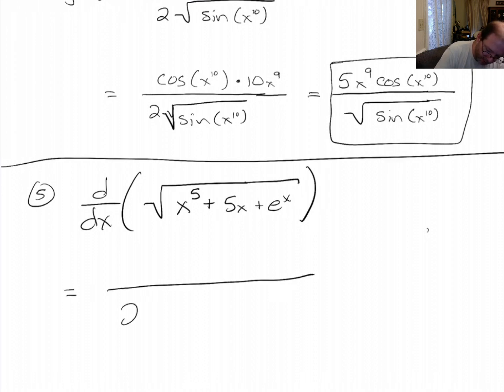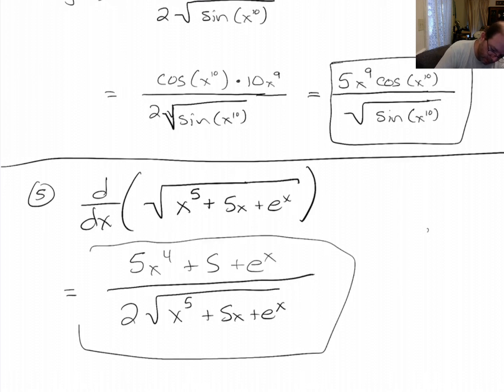Alright. What my rule says is this becomes 2 root of this. And up top, we get the derivative of that inside function. 5x to the 4th plus 5 plus e to the x. Alright. That's it.